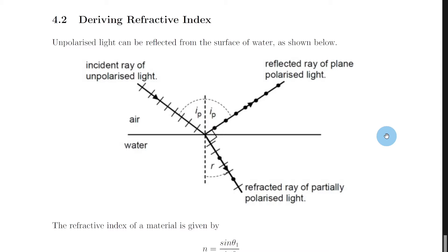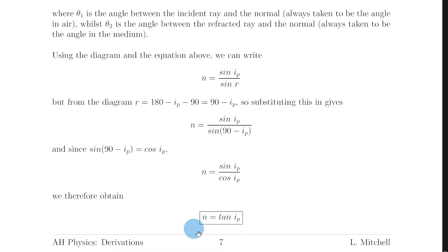Just like the derivation for lens coating thickness which we saw in the previous video of this series, we're going to make use of a diagram to help us derive an expression for refractive index in terms of Brewster's angle from the polarization section of the waves topic. So we're trying to derive this equation here: n equals tan(ip), where n is refractive index and ip is Brewster's angle.